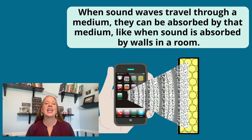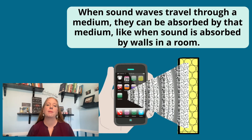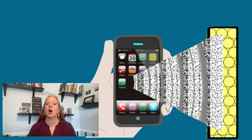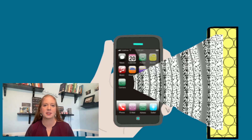When sound waves travel through a medium, they can be absorbed by that medium, like when sound is absorbed by walls in a room. This is why quieter rooms often have soft materials like carpets or curtains.